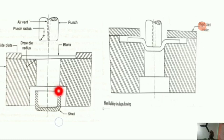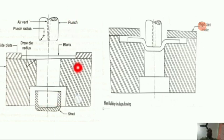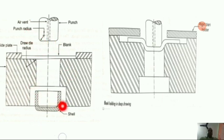This setup is similar to that used in blanking, except that the punch and die are provided with necessary rounding at the corners — a punch radius — to allow for the smooth flow of metal during drawing.